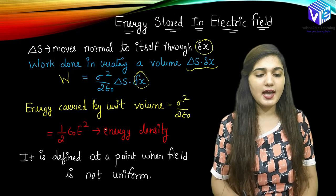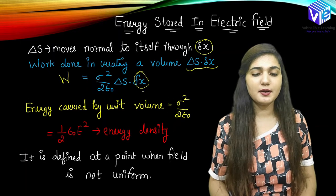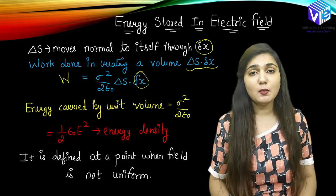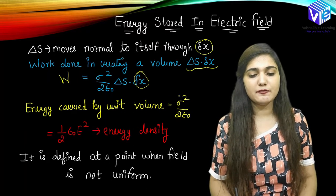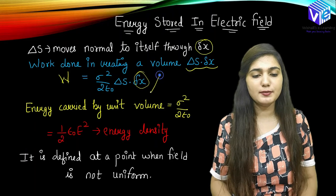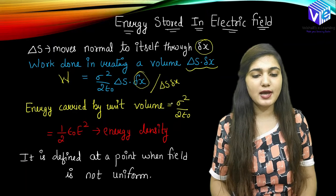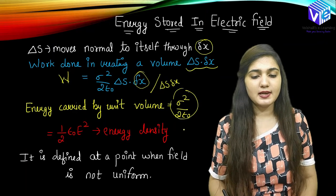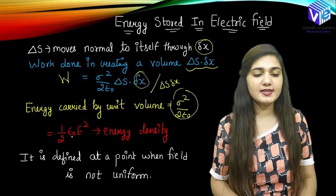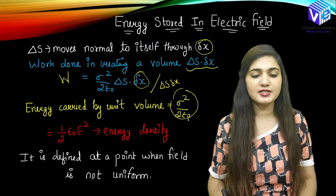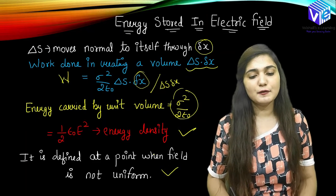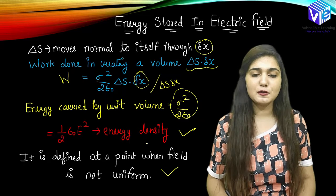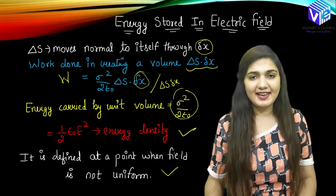So now I got the work done, and energy will be converted per unit volume. If I divide the work done by the volume, I get the energy density. Energy will be equal to σ²/(2ε₀) because the volume is ΔS × ΔX — dividing by ΔS × ΔX gives σ²/(2ε₀). This can be equated as ½ε₀E², which is the energy density. It is defined at a point when the field is not uniform, so at that point also we can define the energy stored in the electric field.